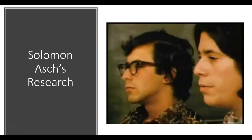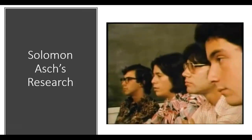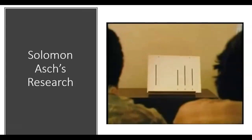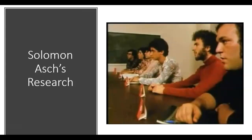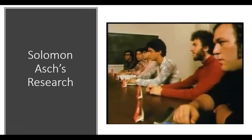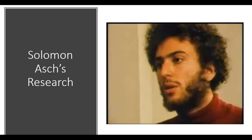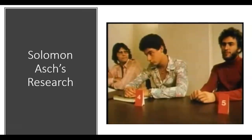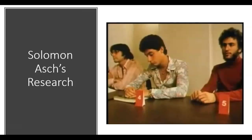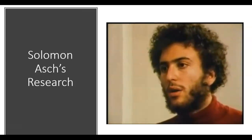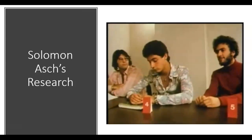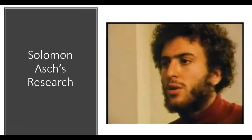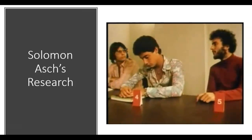In a variation, Asch gave the naive subject a partner—seated in the third position—who also gives the correct response. With a partner, yielding drops to only 5% of critical trials, compared to 37% without a partner. Although subjects report warmth and good feeling toward the partner, they typically deny he played a role in their independence. This variation shows that much of the group's power came not merely from its numbers, but from the unanimity of its opposition. When that unanimity is punctured, the group's power is greatly reduced.